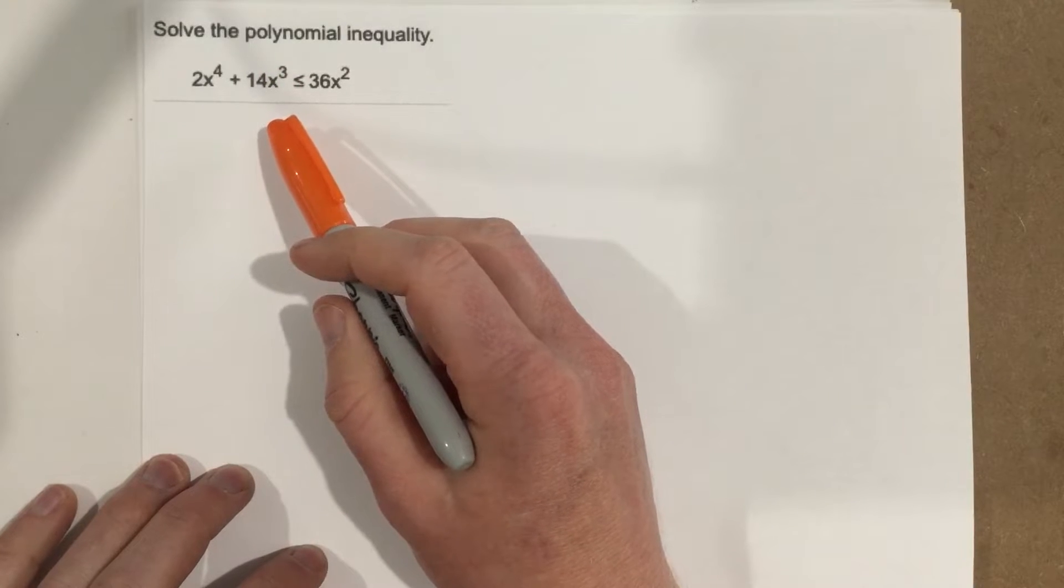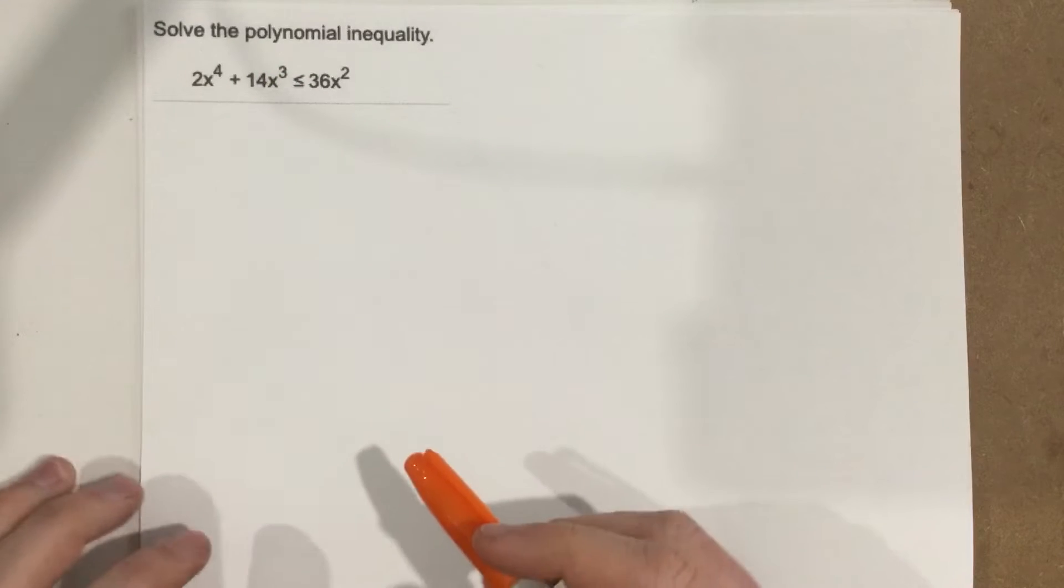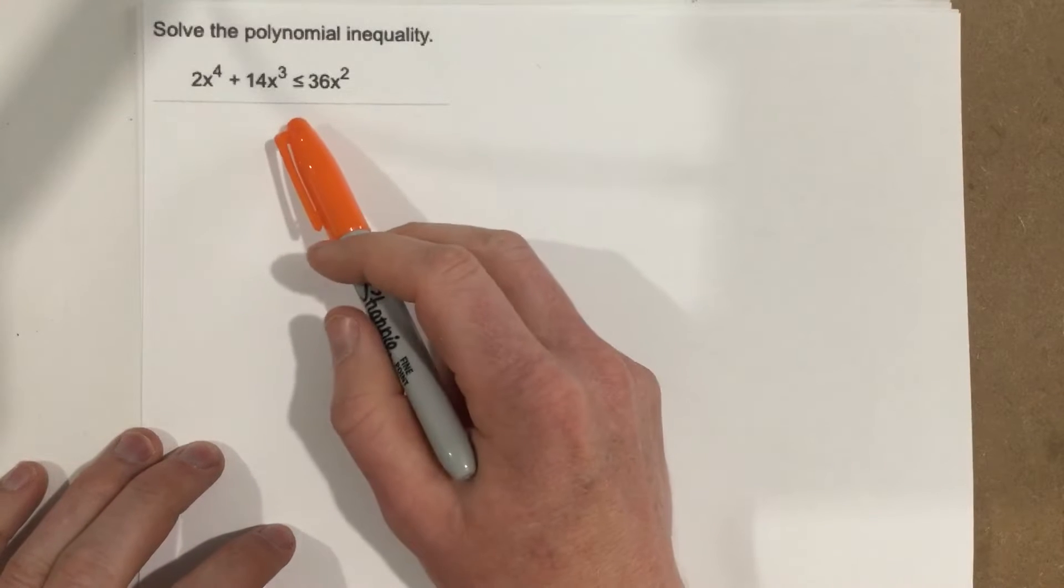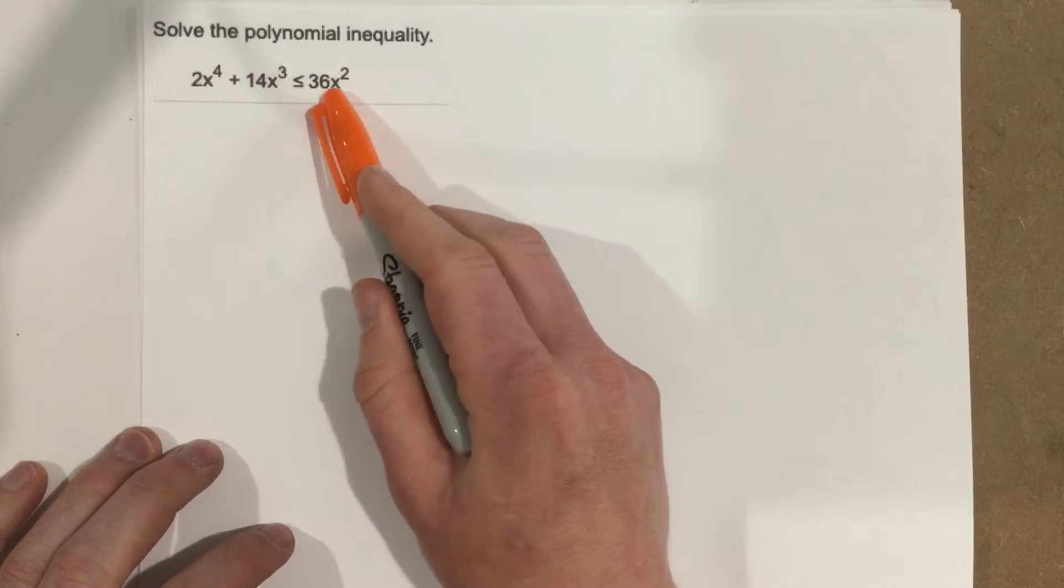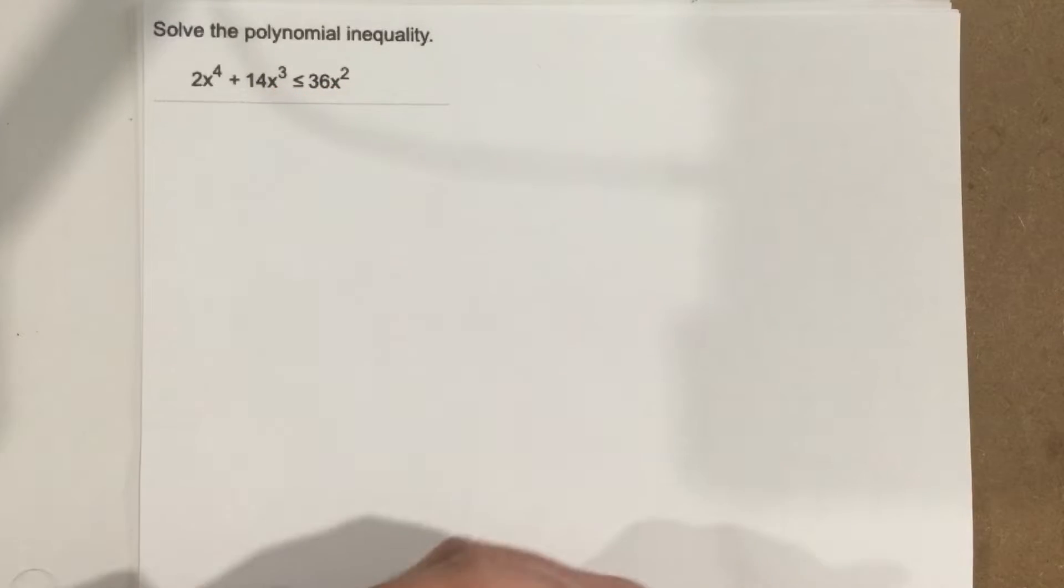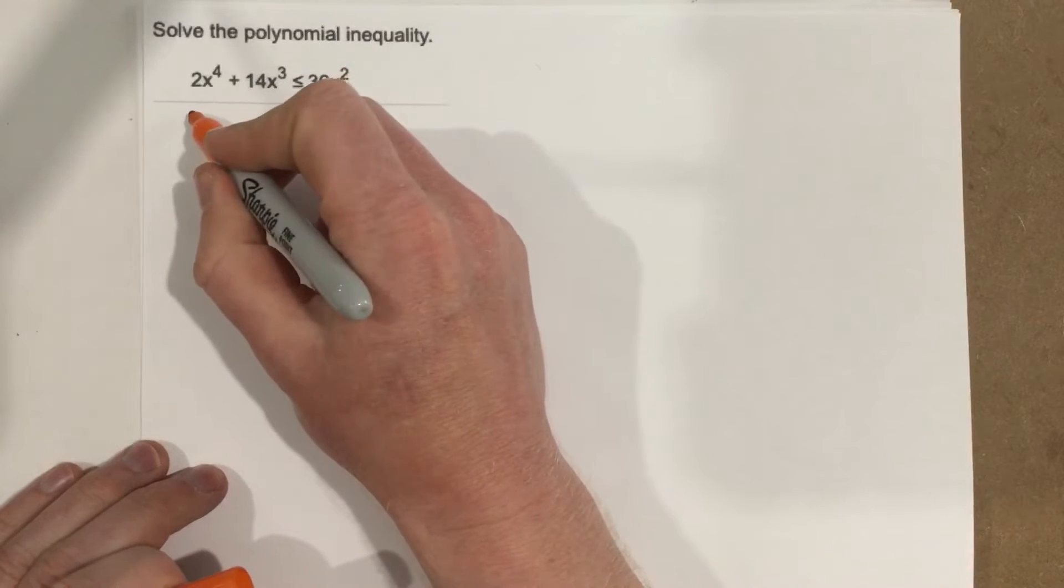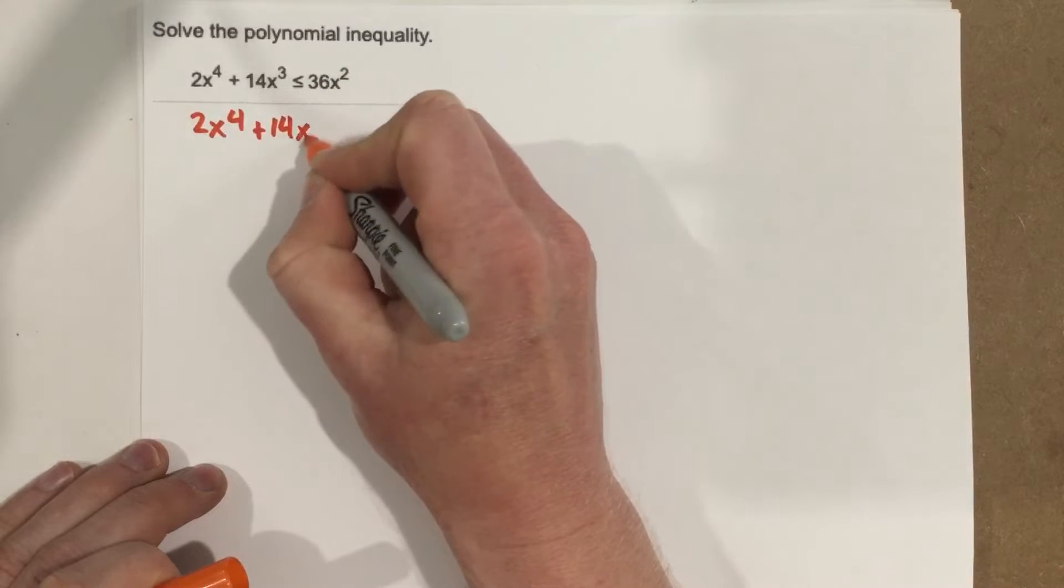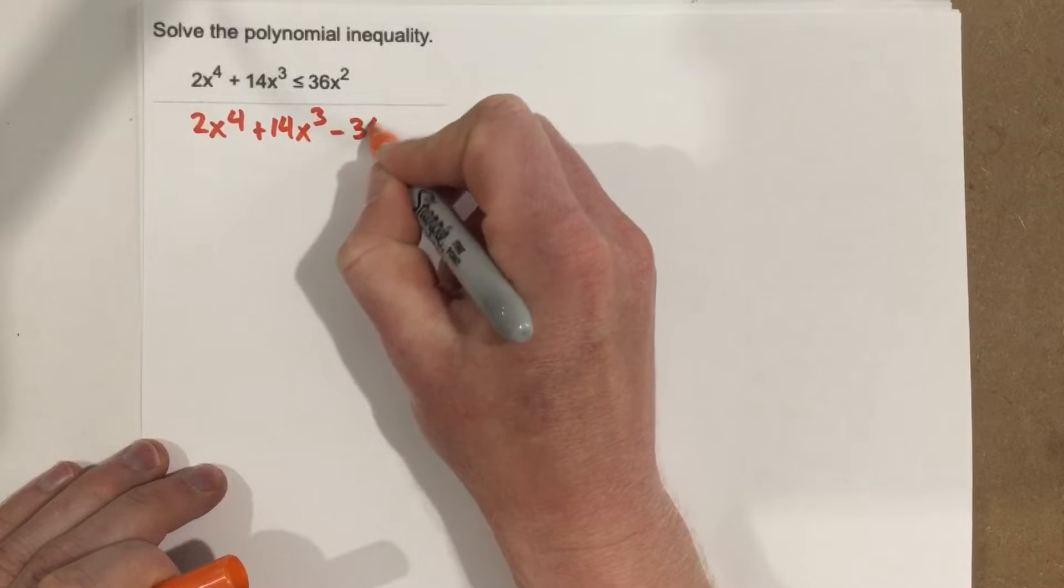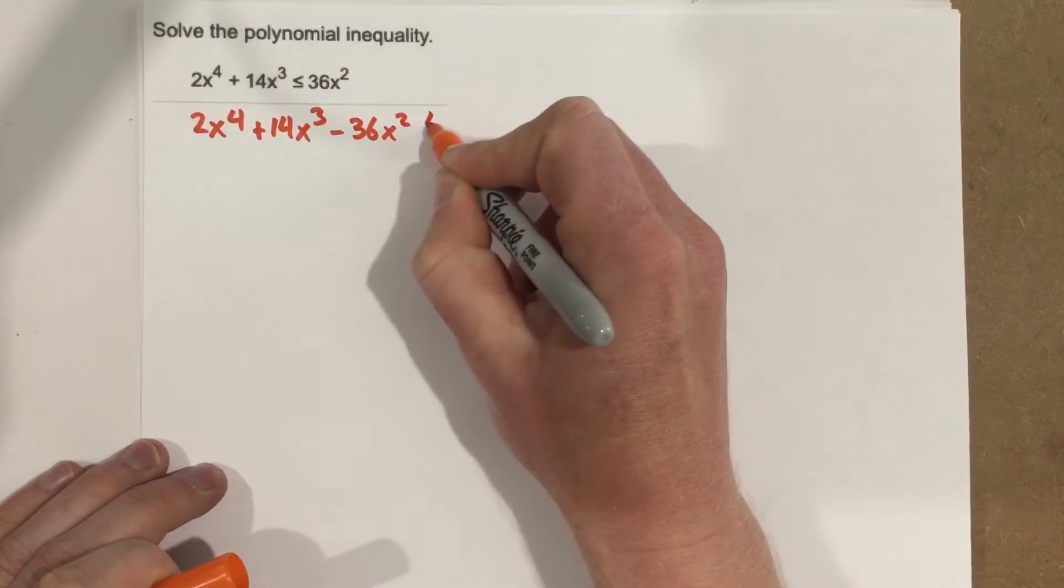Now anytime you solve any polynomial inequality, the first step you want to do is get it so that one side is zero. So I think I'm going to subtract the 36x squared to the left side. That gives you 2x to the fourth plus 14x cubed minus 36x squared, less than or equal to zero.